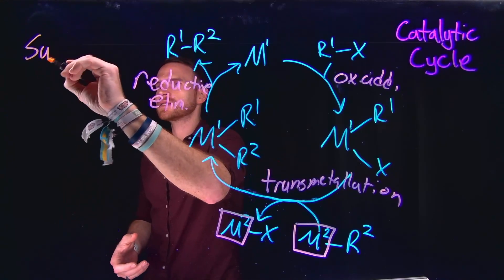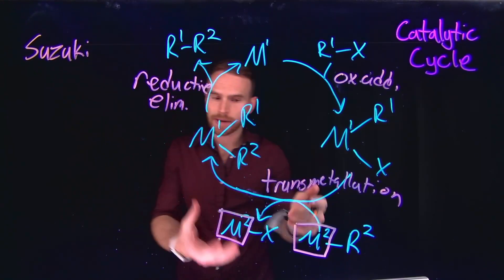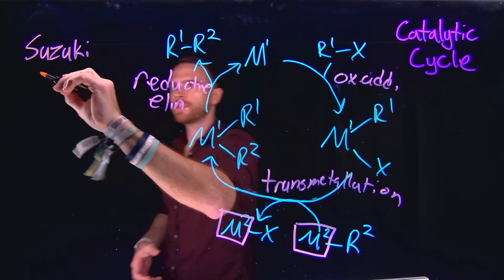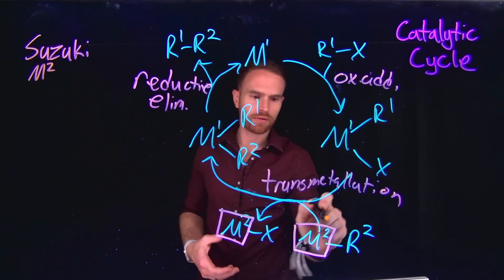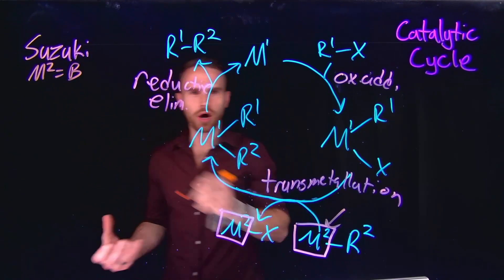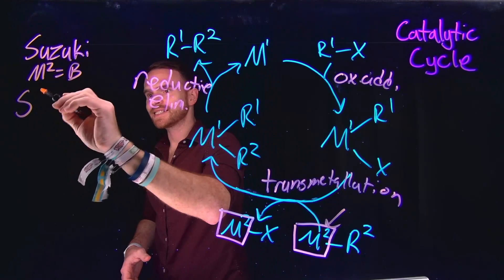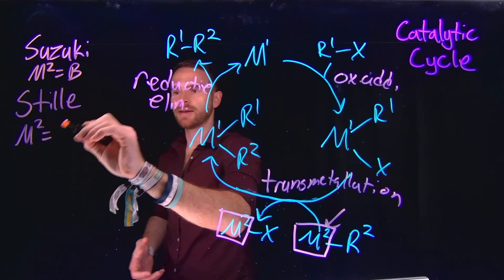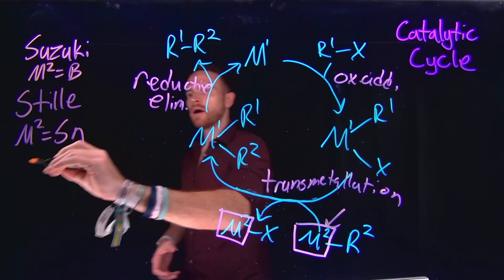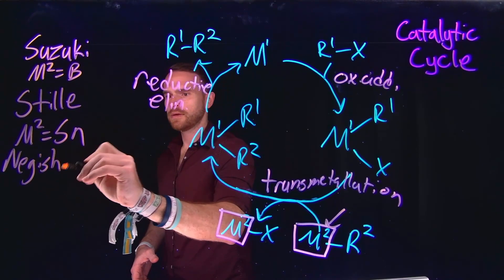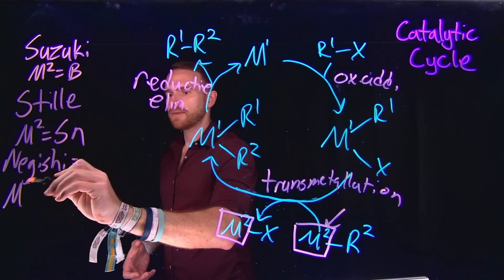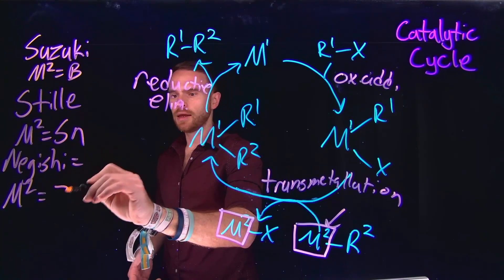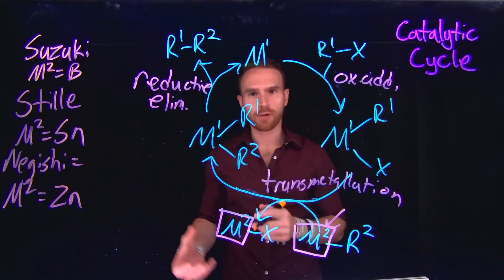For example, in Suzuki coupling, the transmetallating agent is actually a boron-containing species, or a boronate ester. In Stille coupling, the metal involved in transmetallation is typically an organotin molecule, or Sn. For Nagishi coupling, this transmetallating agent is typically going to be an organozinc reagent. And many of these we have actually seen previously when we talked about organometallic reagents.